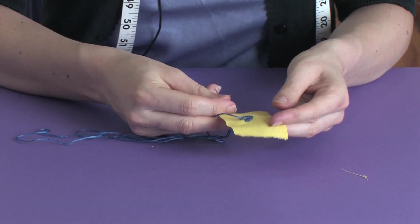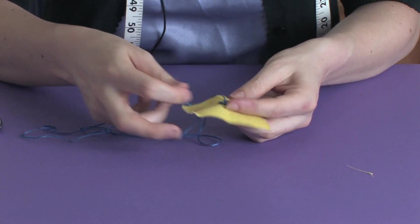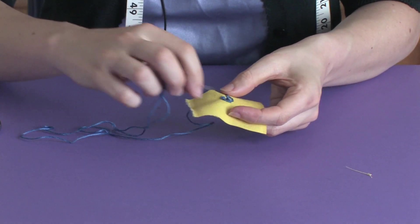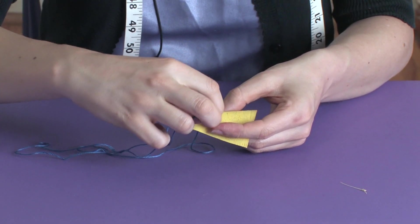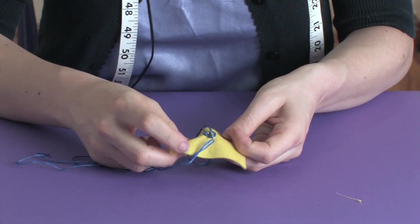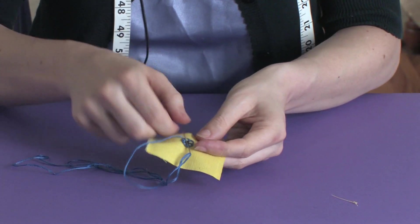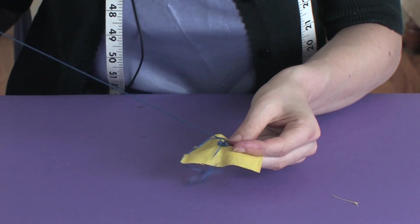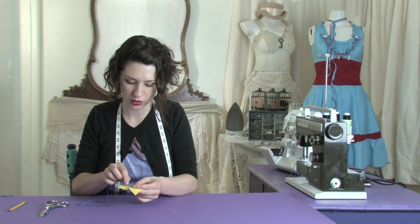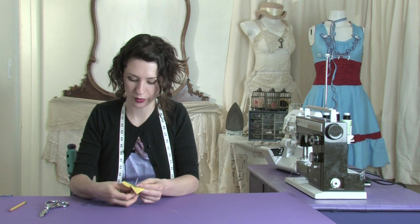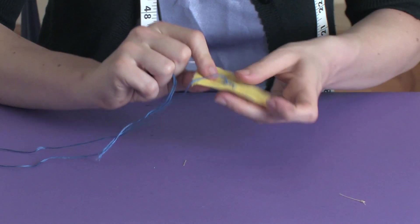So you continue around like that and then once you get to the end of your circle, you're going to make your final down through the hole, up through the fabric, over the thread. Just go down through the fabric and tie it off on the end.